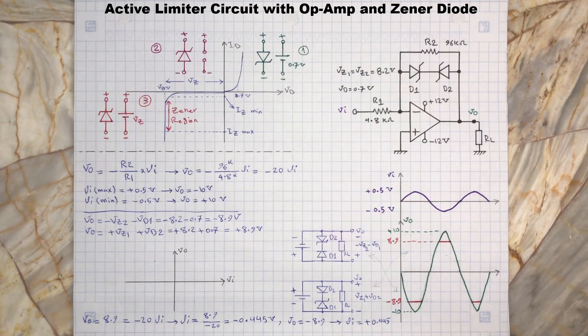In summary, the circuit output to input voltage relationship will be: when Vi is greater than or equal to 0.445 volts, then Vo is minus 8.9 volts.